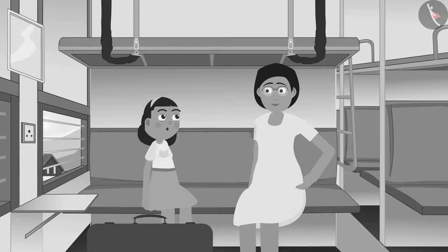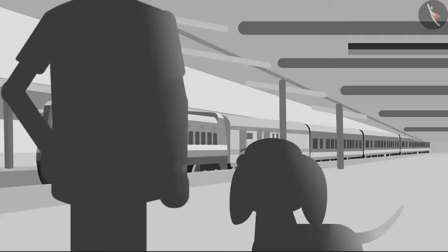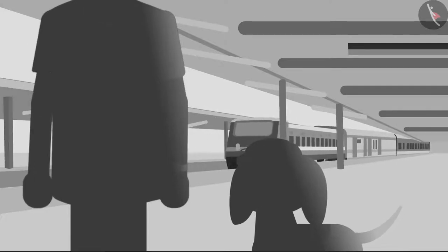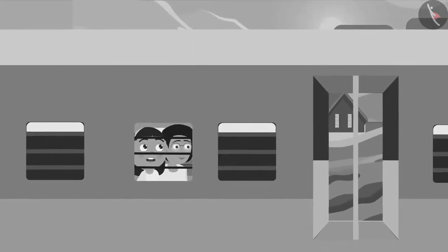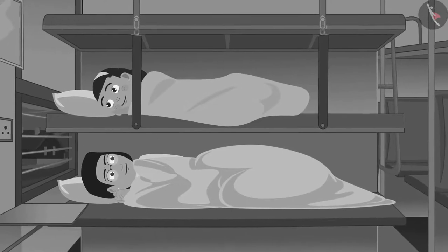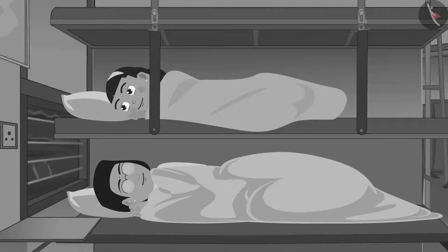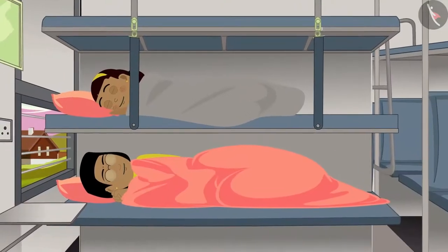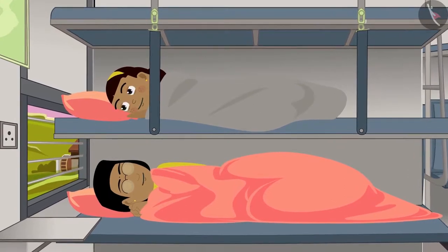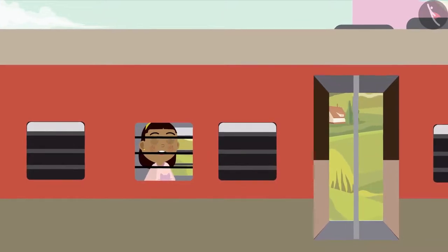Zia is traveling with her mother by train. Zia's father and Bobo had come to drop them off at the railway station. After traveling on the train for a day, both Zia and her mother went to sleep in separate berths at night. Zia woke up when the train stopped in the morning and comes down to look out of the window.